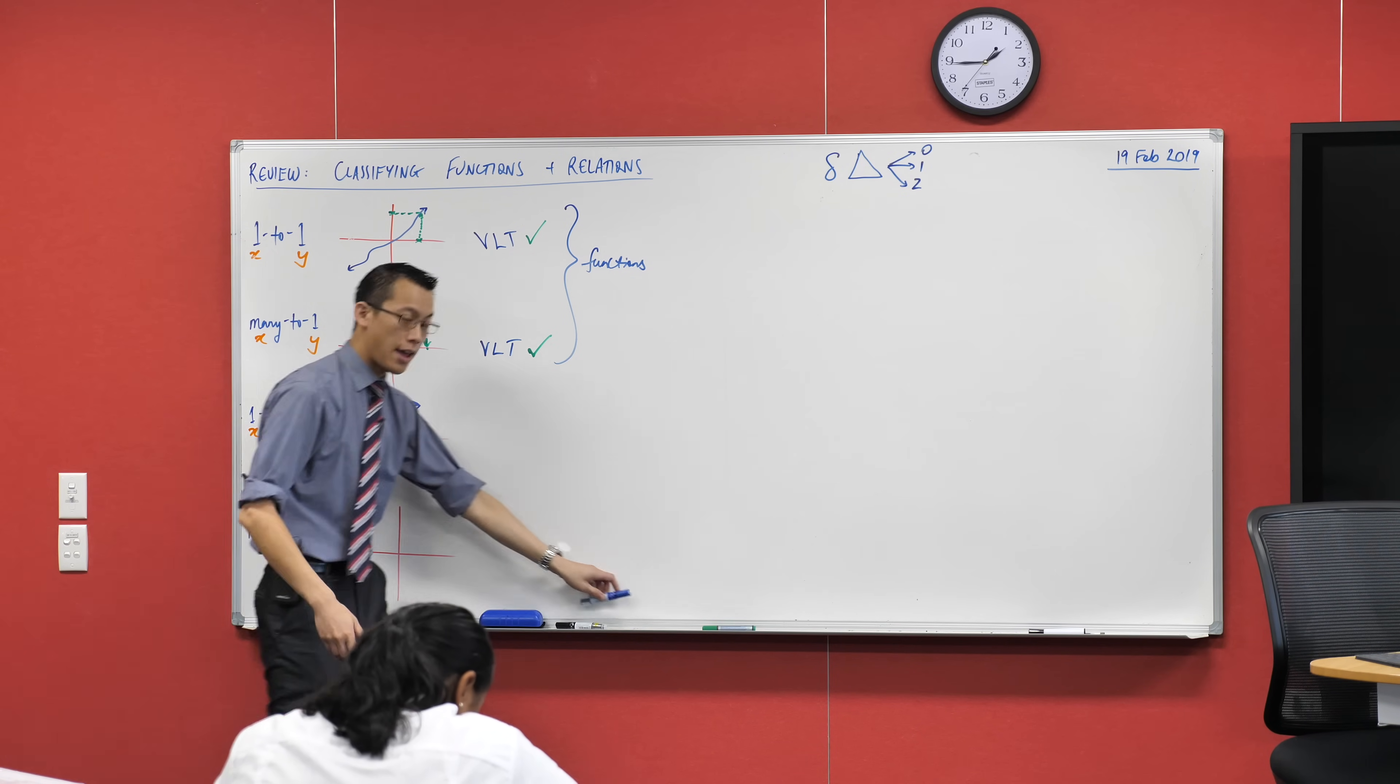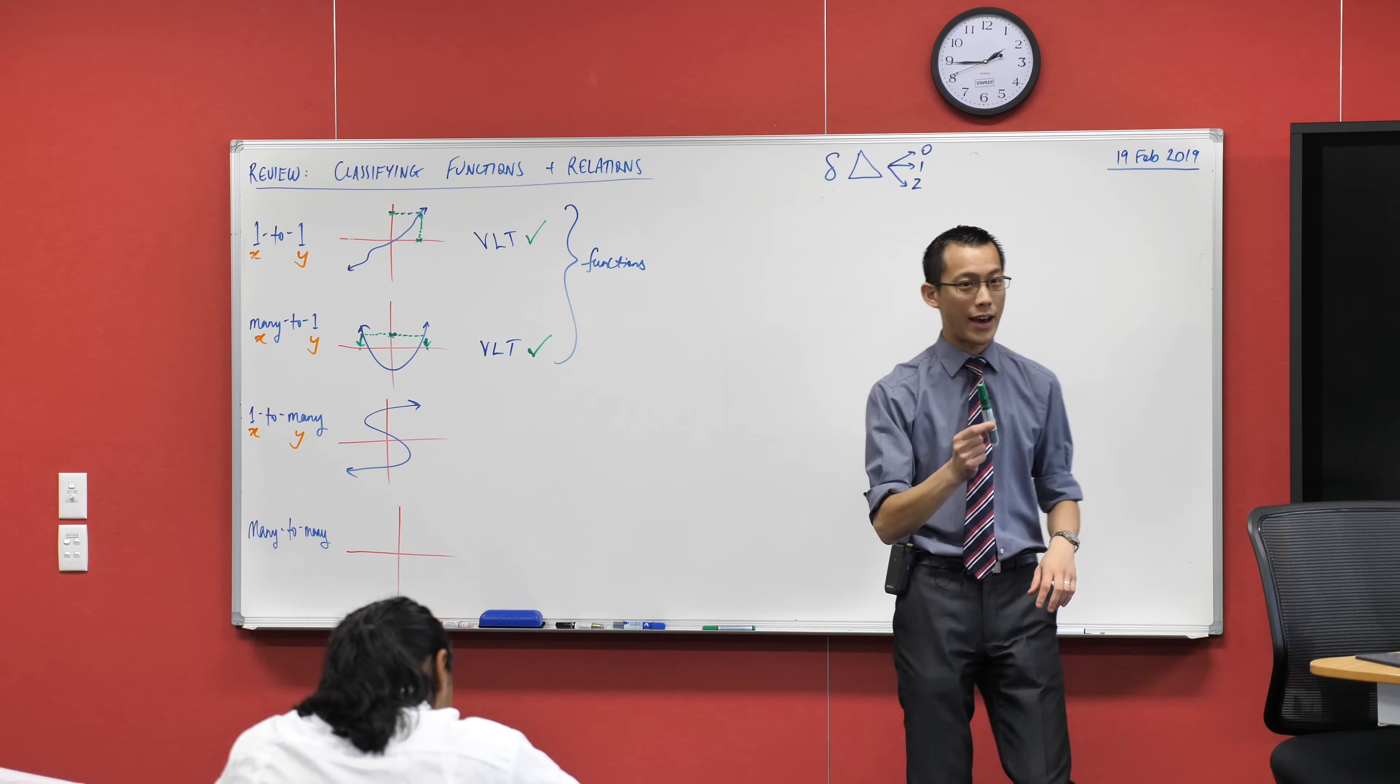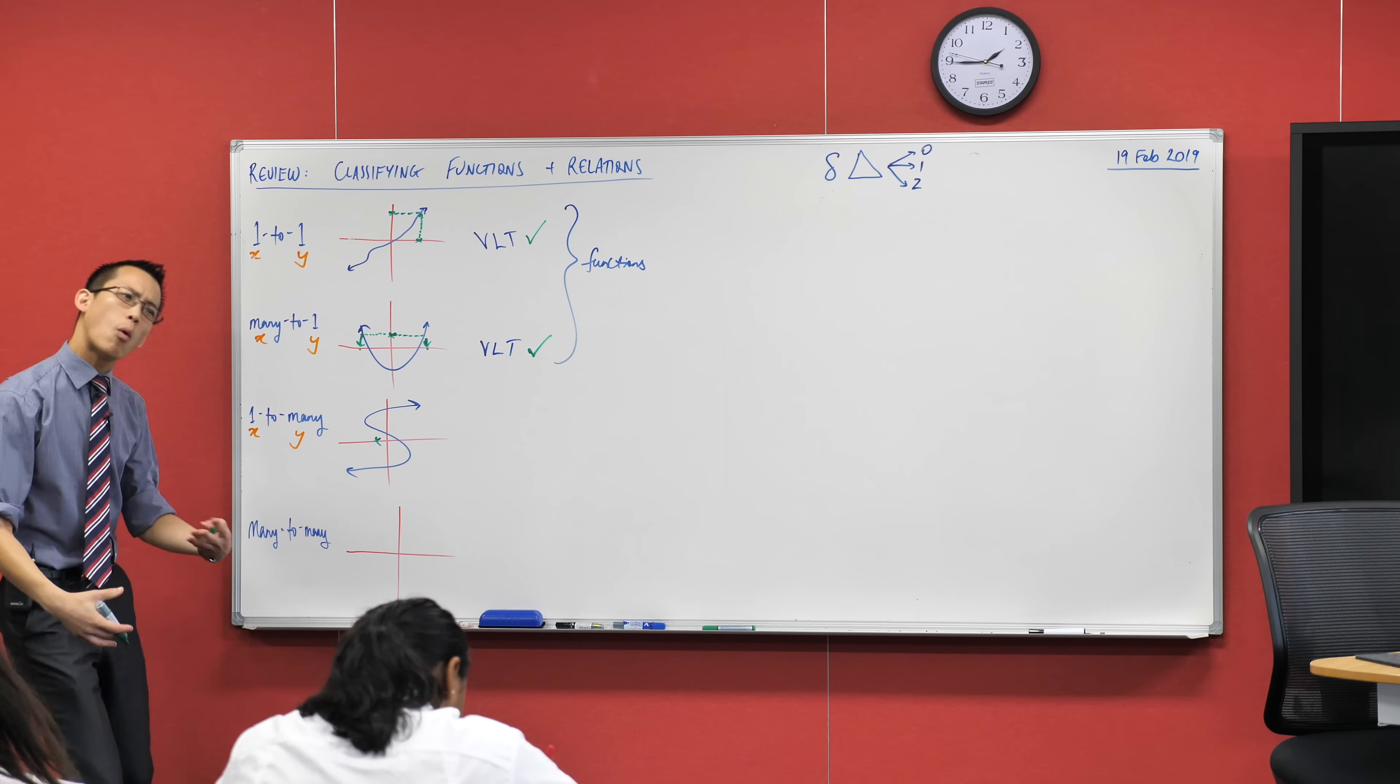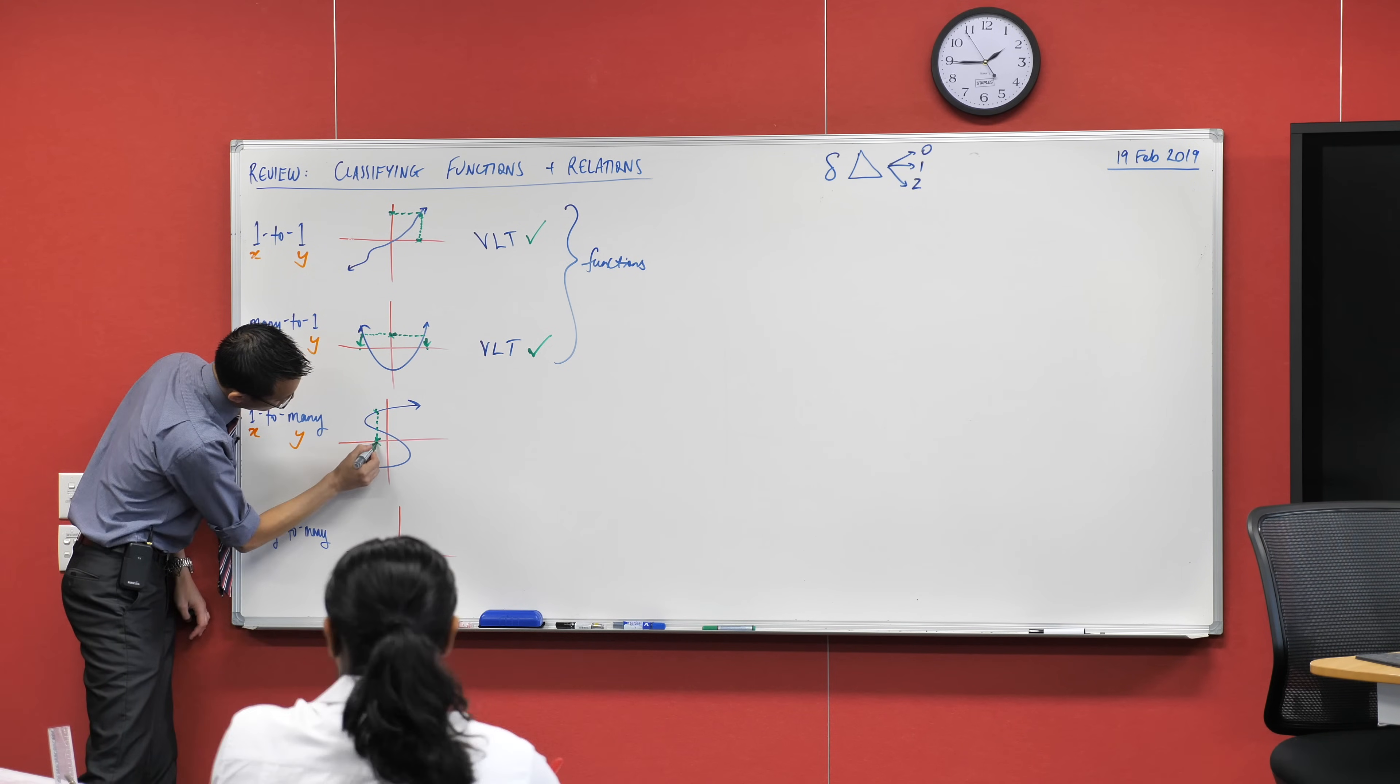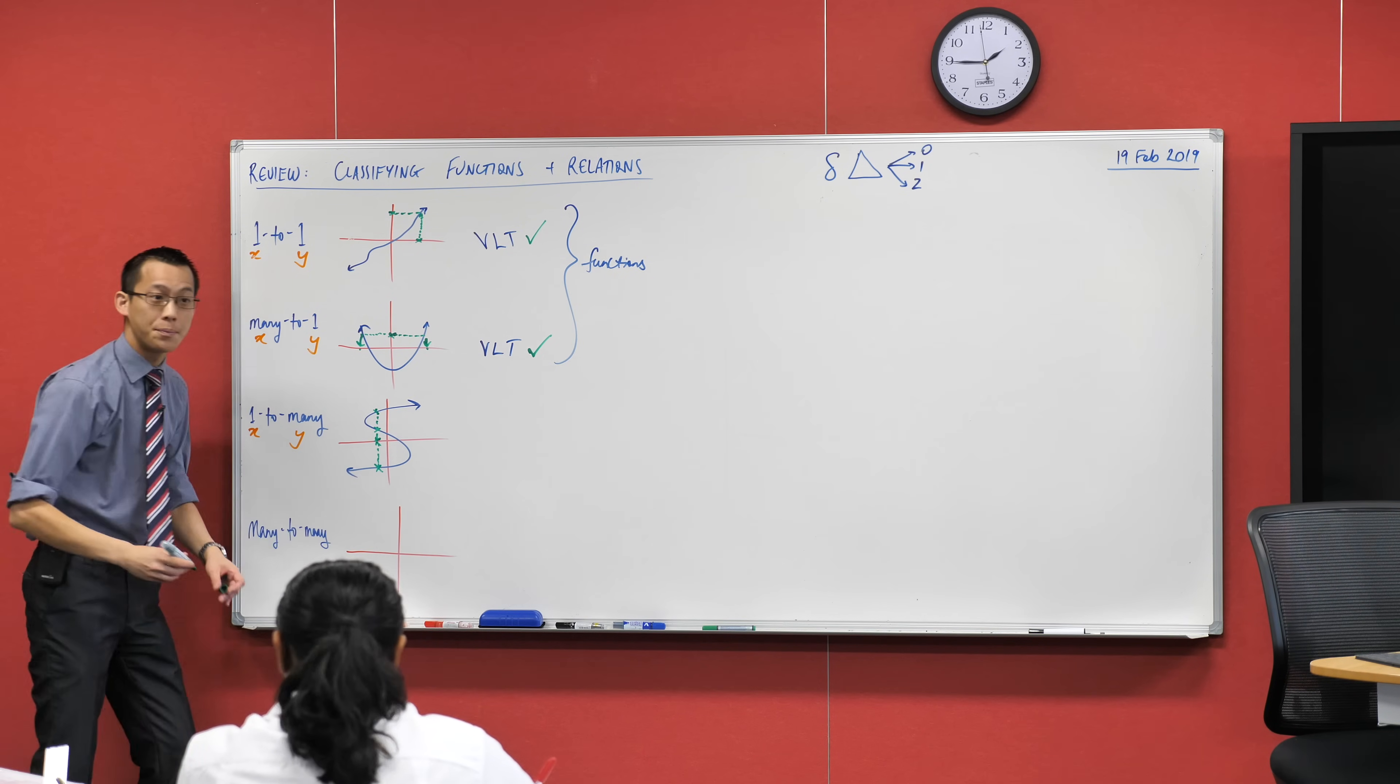Now the thing here is, if I pick a single x value, let's get my green again, if I pick a single x value, clearly, like, pick one, like here, you see that guy, it's like, which y value does that correspond to? And the answer is lots of values, right? In this particular case, there's three of them, right? So I've got one up here, there's a second one I've already collided with, and there's a third one over here, okay?